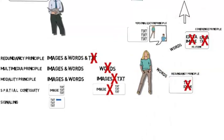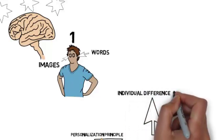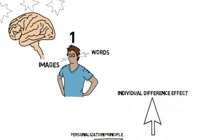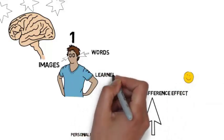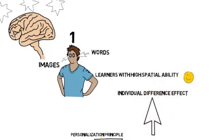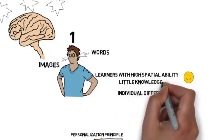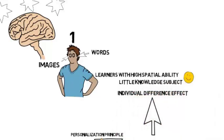These were the general principles. The effects do differ by individual. The individual difference effect. The principles work best when learners have high spatial ability. This is meaningful to measure in IQ. But of course, in a classroom, this is difficult to determine. But it also works well for learners who have little knowledge of the subject.